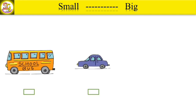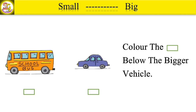Look at the picture. Now color the square below the bigger vehicle.